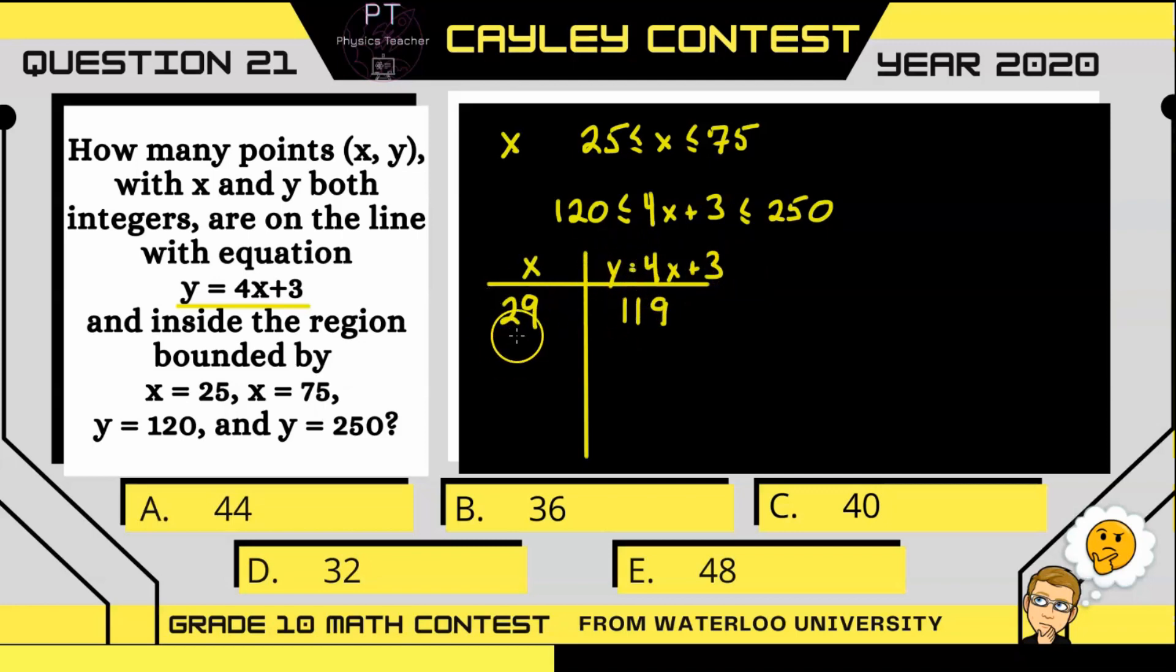So I know no number lower than 29 is going to be within this range, but the next one up, 30, if x equals 30, y is going to equal 123. So that is one that is within this range for this domain.